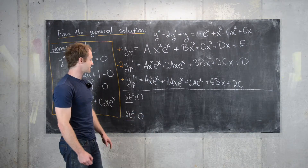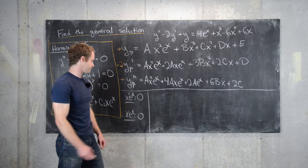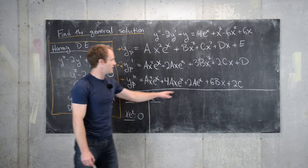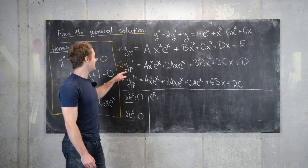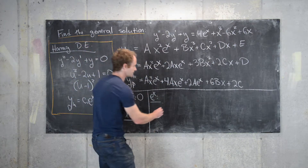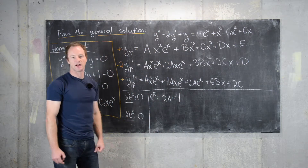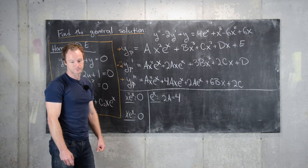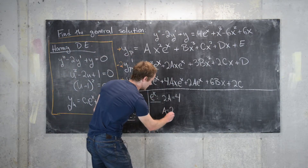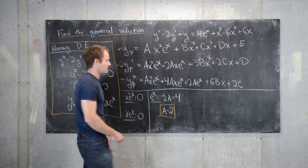Now looking at the plain e^x terms: from y_p'' we have 2a, and there are none from y_p' or y_p. The right-hand side has 4·e^x, so 2a = 4, which tells us a = 2. We've determined the first coefficient.